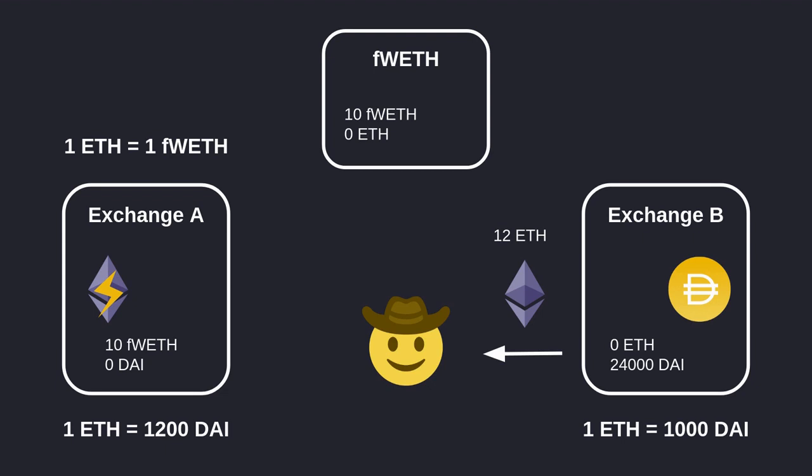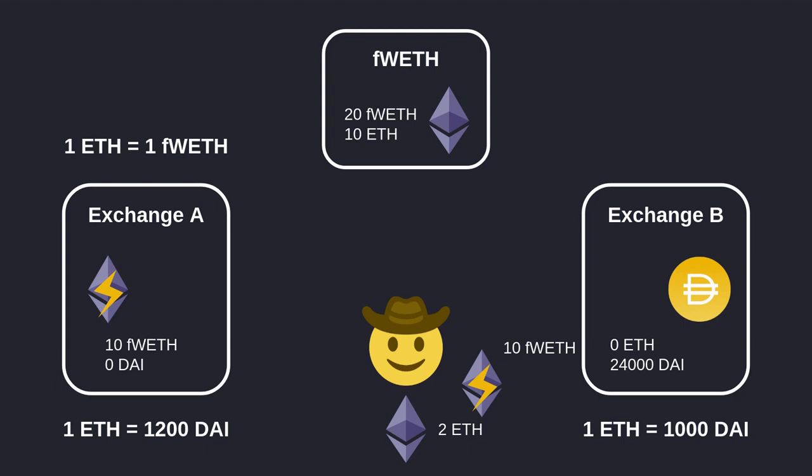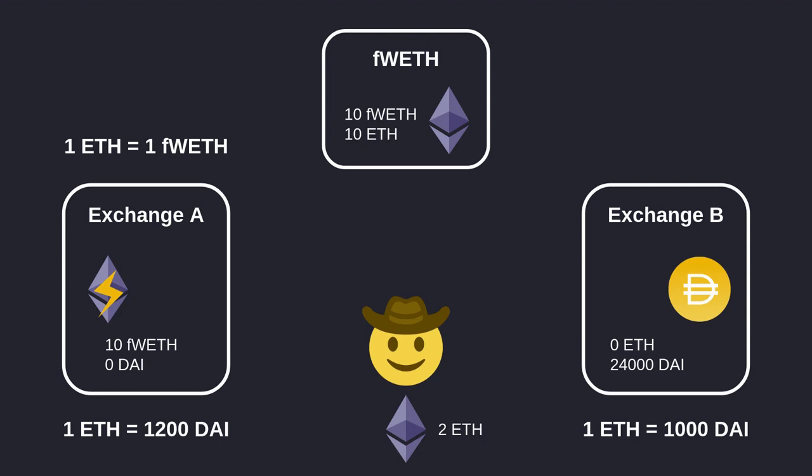We take this DAI over to Exchange B and buy ETH. At the end of the transaction, the 10 fWETH we minted will be destroyed. But we don't own any fWETH to destroy — we gave it to Exchange A, which now owns it. So to complete the transaction, we mint another 10 fWETH by sending 10 ETH back to the fWETH contract. Now the fWETH contract has 10 ETH, Exchange A has 10 fWETH, we have 2 ETH profit, and at end of transaction the originally minted 10 fWETH is burnt, leaving us with 2 ETH profit.